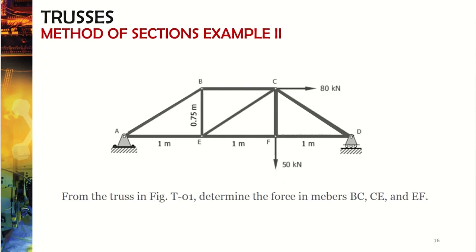In that last question we used method of joints for part of the solution. Here's an example where you would really use method of sections to solve for everything. The question asks for forces in members BC, CE, and EF. Looking at those three things, they form a nice Z or sideways N pattern. Whenever that's the case, you'll almost always want to make a section cut through the middle of those three members.